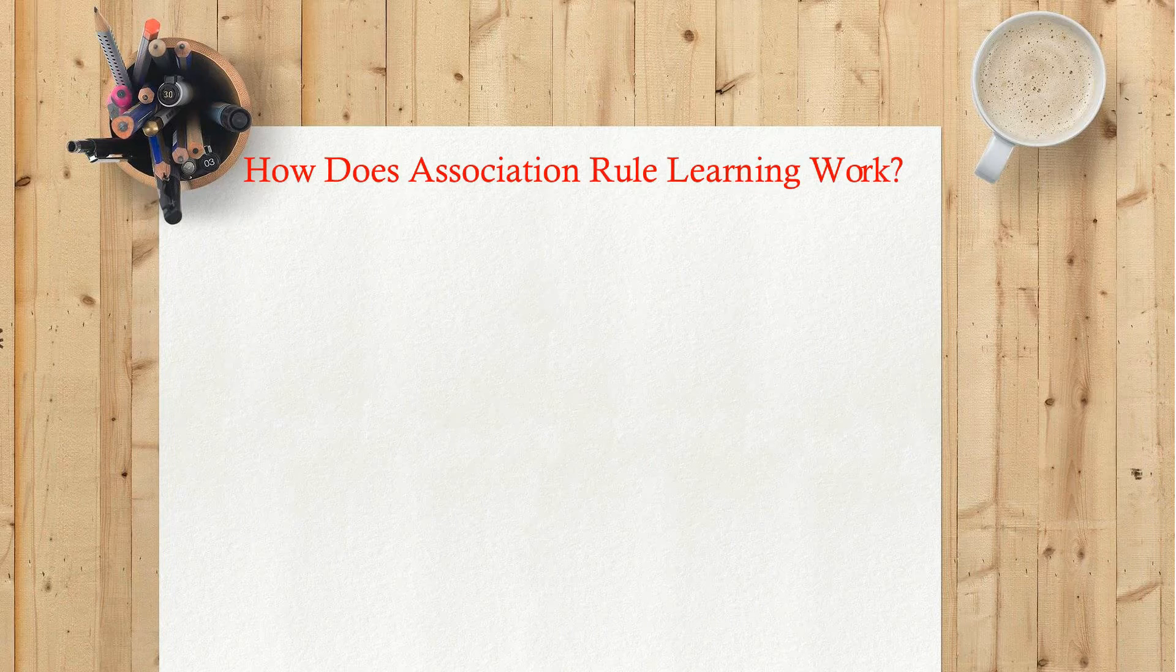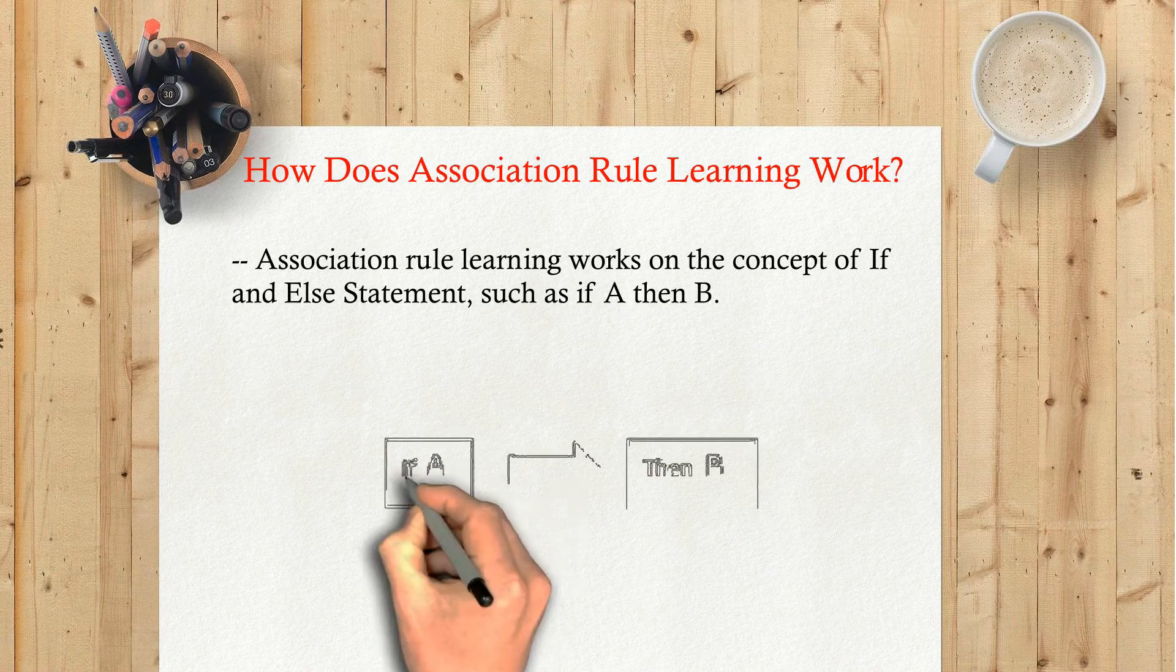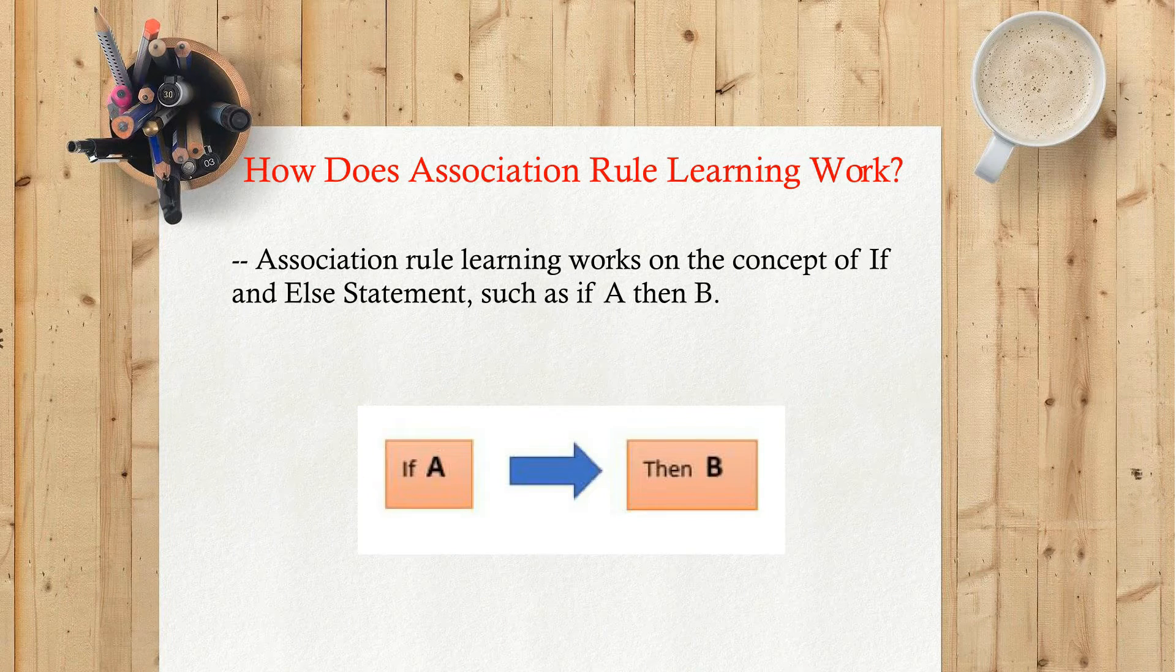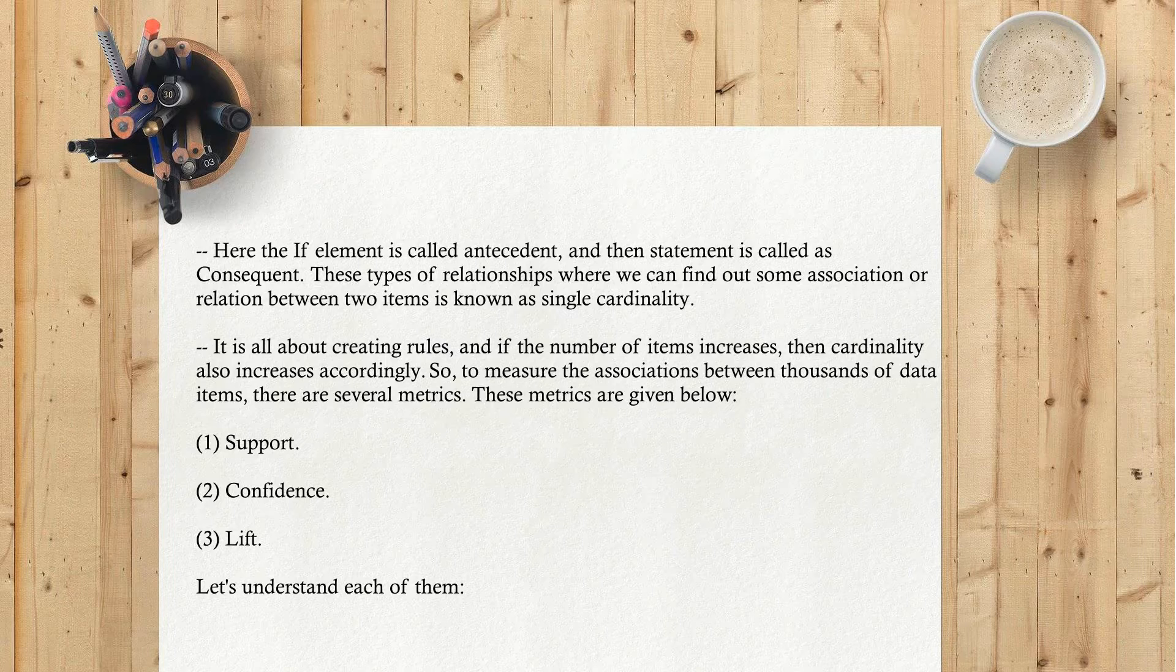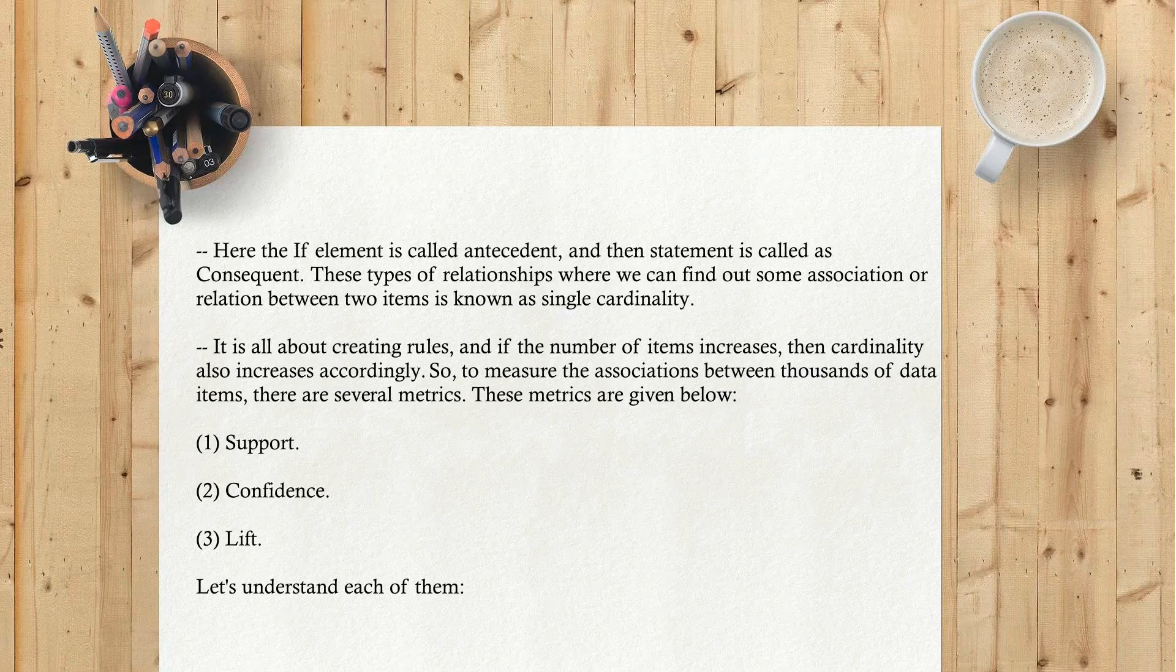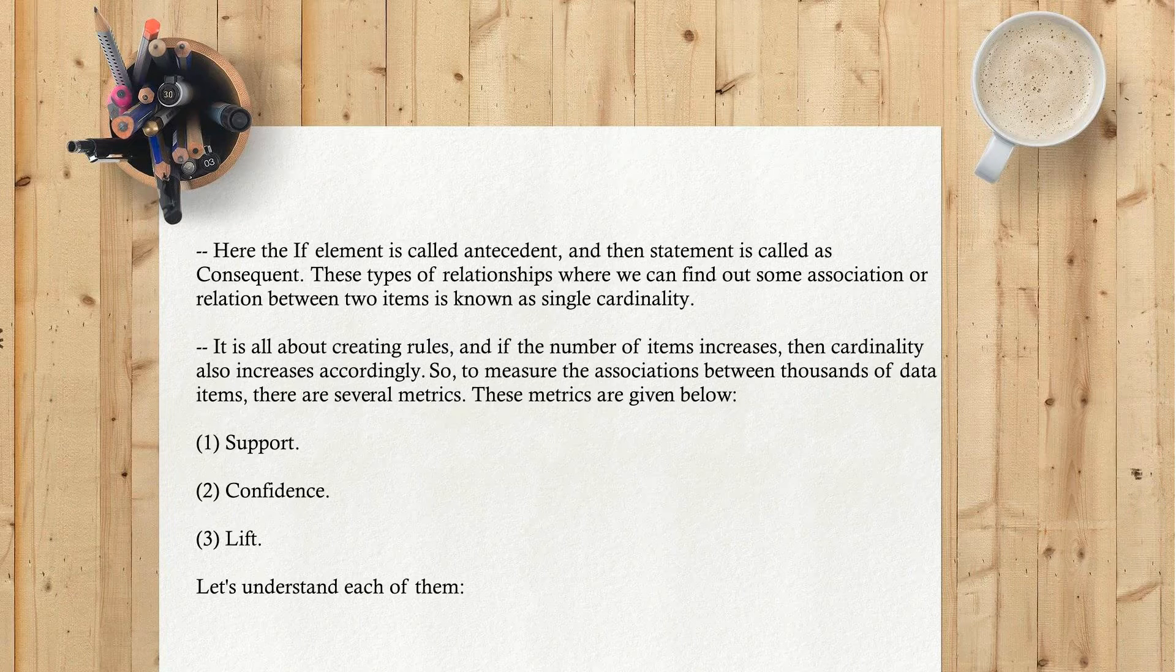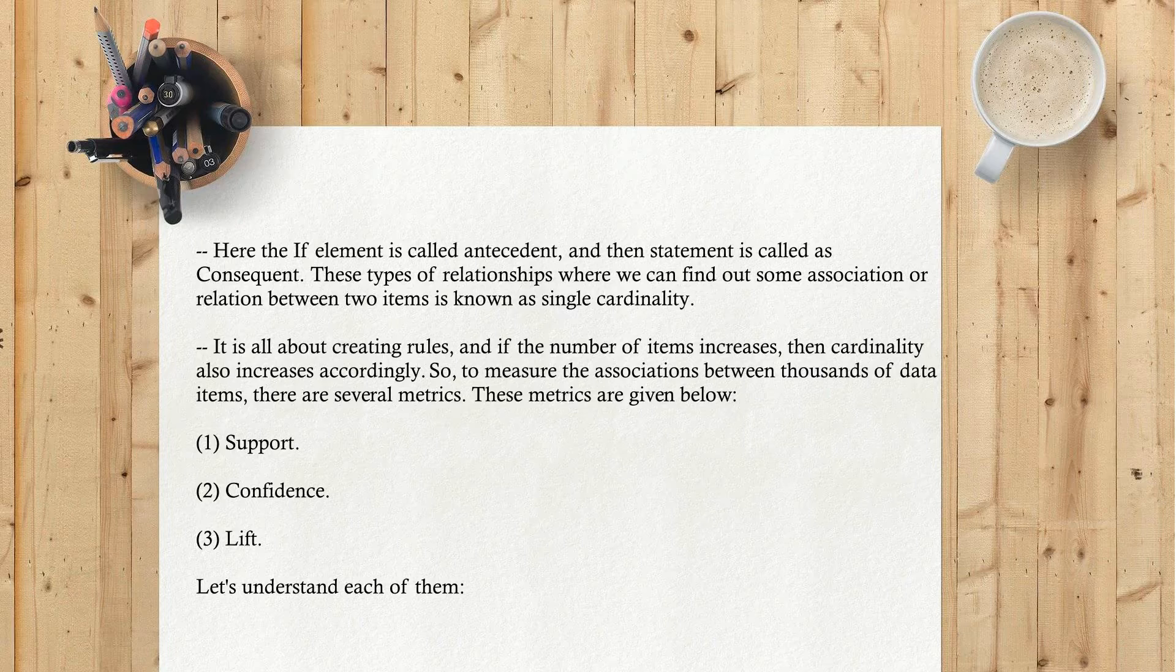How does association rule learning work? Association rule learning works on the concept of if and else statement, such as if A then B. Here the if element is called antecedent and the then statement is called consequent. These types of relationships where we can find some association or relation between two items is known as single cardinality. It's all about creating rules, and if the number of items increases, then cardinality also increases accordingly.